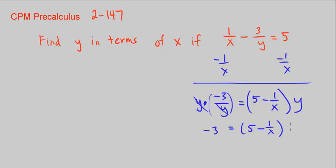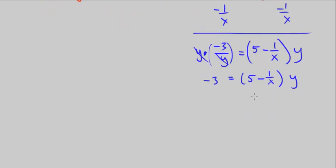Finally, we want to get y alone. Let's divide both sides by the expression 5 minus 1 over x, because we don't want to distribute y in—that would be counterintuitive since we want it isolated.